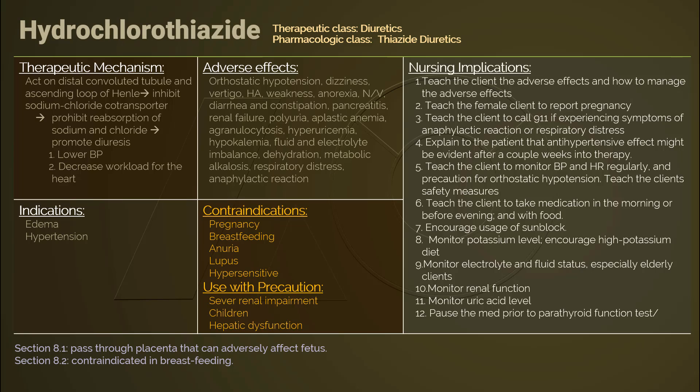Monitor potassium levels and encourage a high-potassium diet. Be mindful of symptoms of hypokalemia such as muscle weakness and cramps. Potassium-sparing diuretics or potassium supplements might be prescribed. Monitor electrolyte and fluid balance, including sodium level, intake and output, weight, etc. Know that elderly clients are more susceptible to hyponatremia or any fluid and electrolyte imbalance. Any fluid and electrolyte imbalance should be corrected prior to initiating hydrochlorothiazide.